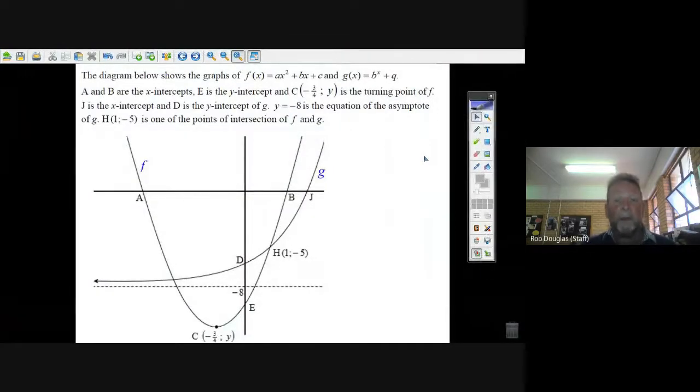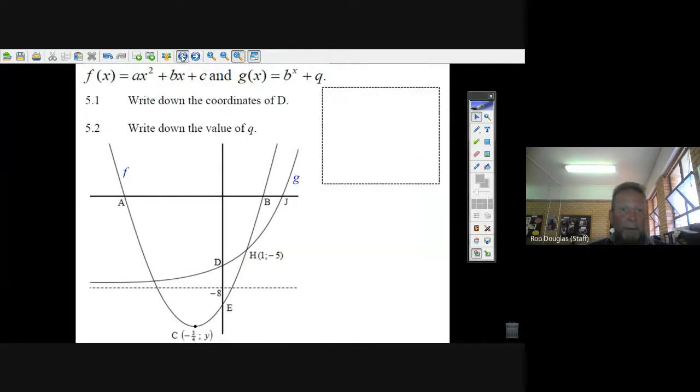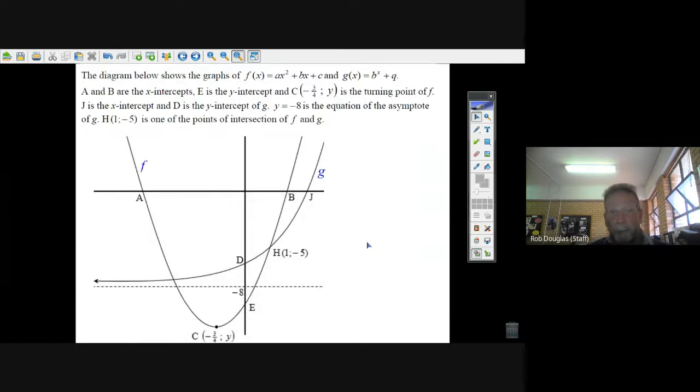Okay, this is the Eastern Cape exam. I think it's question number 5.something, just question 5. It's a big parabola question. It's got a lot of parts to it, so let's get started.